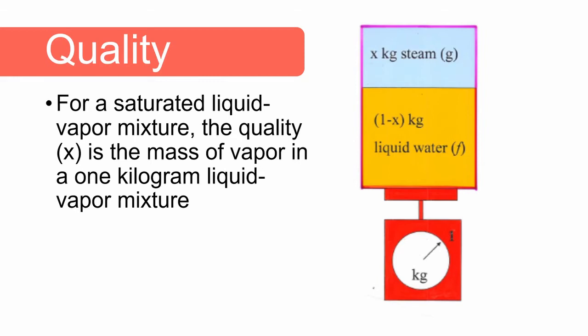The specific volume of the two-phase mixture is equal to the volume of the steam fraction plus the volume of the liquid fraction. The volume of the steam fraction is equal to the mass of the steam x multiplied by the specific volume of the saturated steam. The volume of the liquid fraction is equal to the mass of liquid 1 minus x multiplied by the specific volume of the saturated liquid. This gives us the equation: specific volume is equal to the quality x times the specific volume of a saturated vapor plus 1 minus x times the specific volume of a saturated liquid.